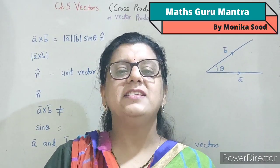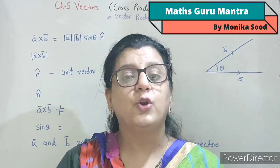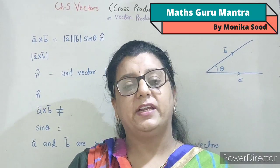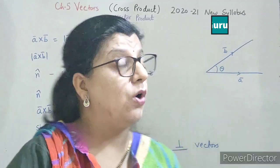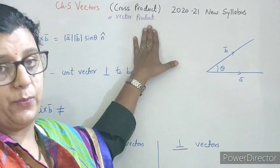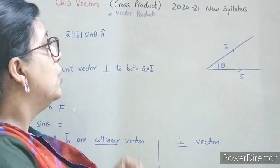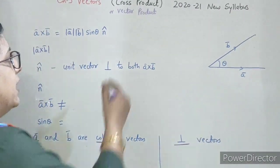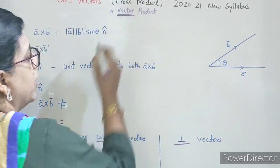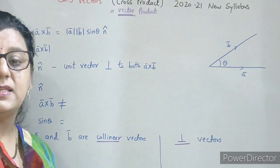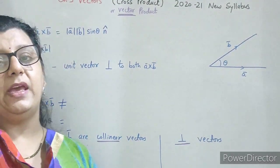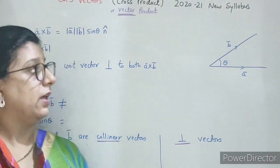Hello dear students. Aaj hum karenge cross product of two vectors, which is also known as vector product. Naam se hi clue mil jaata hai — vector product means the result will be a vector.